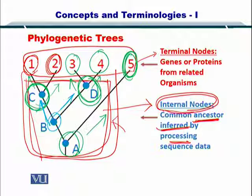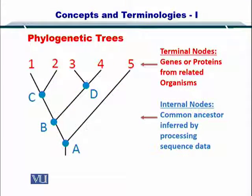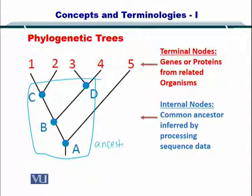The other thing to remember is the term 'inferred.' These ancestors are actually calculated and inferred — we did not know about these ancestors and their order beforehand. We inferred them using phylogenetics, specifically using the algorithms that we will discuss later.